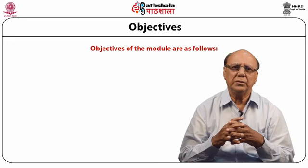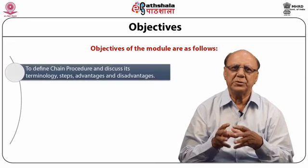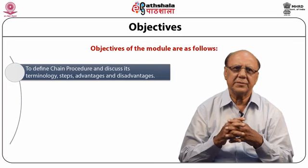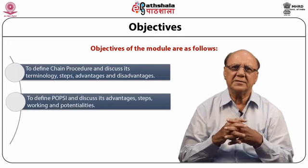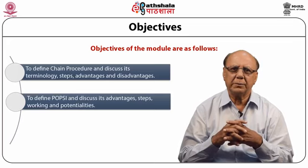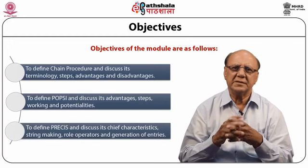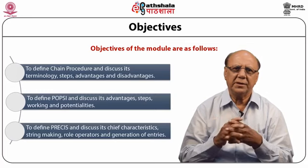The objectives of the module are as follows: to define chain procedure and discuss its terminology, steps, advantages and disadvantages; to define POPSI and discuss its advantages, steps, working and potentialities; and to define PRECIS and discuss its chief characteristics, string making, role operators and generation of entries.